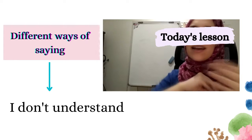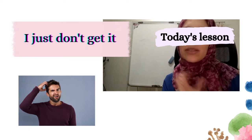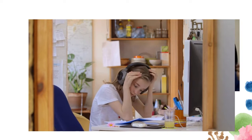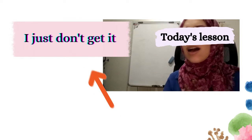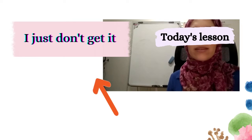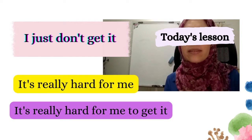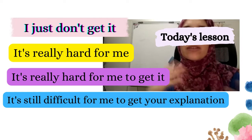Number one: 'I just don't get it.' This is an expression you can use when you don't really understand what the other person is trying to tell you. You can use it in a meeting or in class when a classmate, friend, or teacher is trying to help you understand something but it's still very difficult. For example: 'I'm sorry, I just don't get it,' or 'It's really hard for me to get what you are saying' or 'It's still difficult for me to get your explanation.'